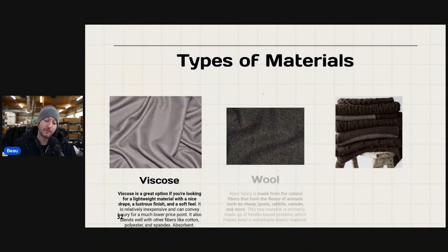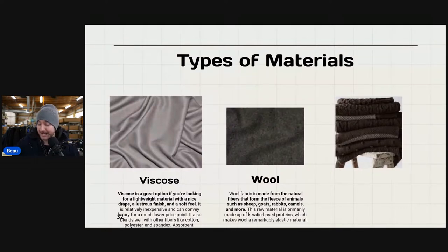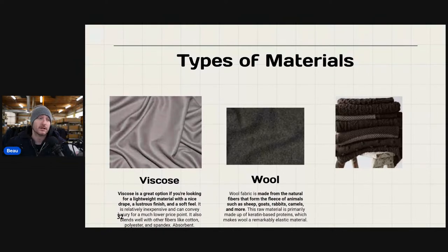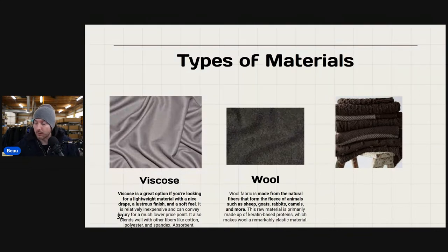Wool is a fabric made from the natural fibers that form the fleece of animals such as sheep, goats, rabbits, camels, and more. This raw material is primarily made up of keratin-based proteins, making wool a remarkably elastic material. Wool is one of my favorites to find and source — it's abundant in my area and I can source it on a relatively cheap scale. If you live in a colder climate and see wool coats and wool blazers, consider picking them up no matter the brand.